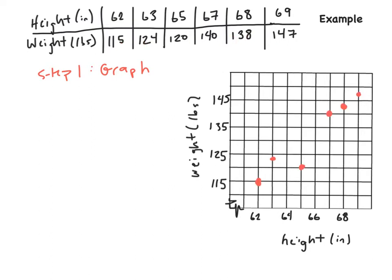Alright. So now we have our graph with our points. 62, 115. 63, 124. 65, 120. 67, 140. 68, 138. 69, 147.